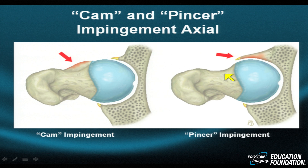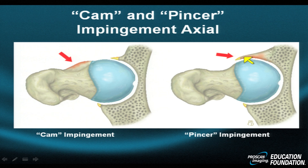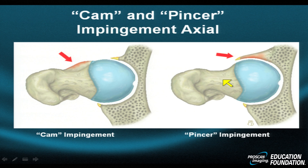In pincer impingement, the problem is more often but not exclusively acetabular. The acetabulum may be overgrown or too deep, so that the head appears sucked in. As a result, in certain positions, portions of the labrum — for instance the anterior wall of the labrum — may rake against the normally tapered neck and create osteoedema and various other manifestations.